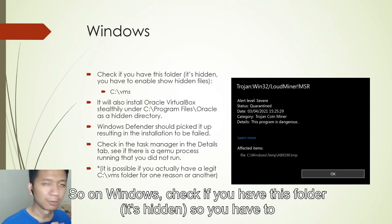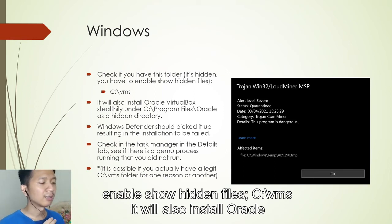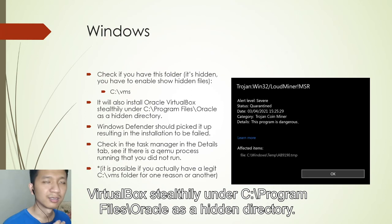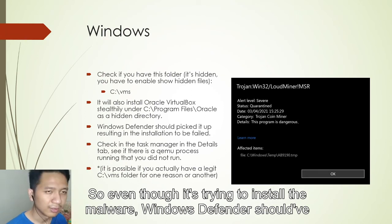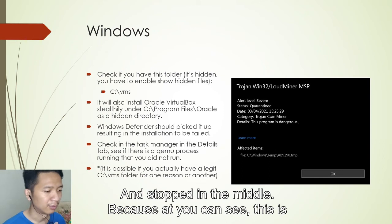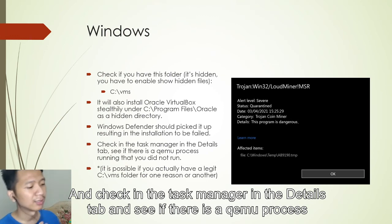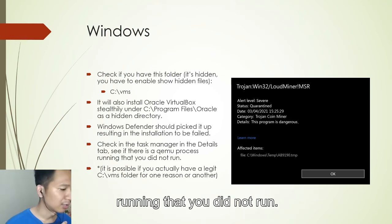On Windows, check if you have a hidden folder at C:\VMs — you have to enable 'Show Hidden Files' to see it. It will also install Oracle VirtualBox and stealthily run from C:\Program Files\Oracle as a hidden directory. Even so, Windows Defender should pick up the installation attempt — it is categorized as Trojan:CoinMiner. Also check the Task Manager Details tab for a QEMU process you did not start.